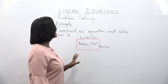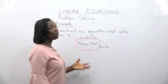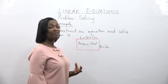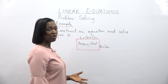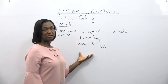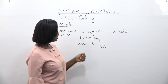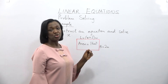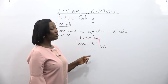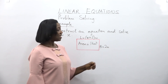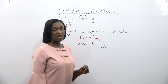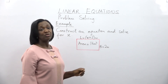In this example, we want to look at solving linear equations involving problem solving. That means the question is given as a story problem, which you now have to interpret and then solve. For example: construct an equation and solve for x. We have a rectangle with the following dimensions: the length is equal to x plus 2 meters, and the breadth is 2 meters.